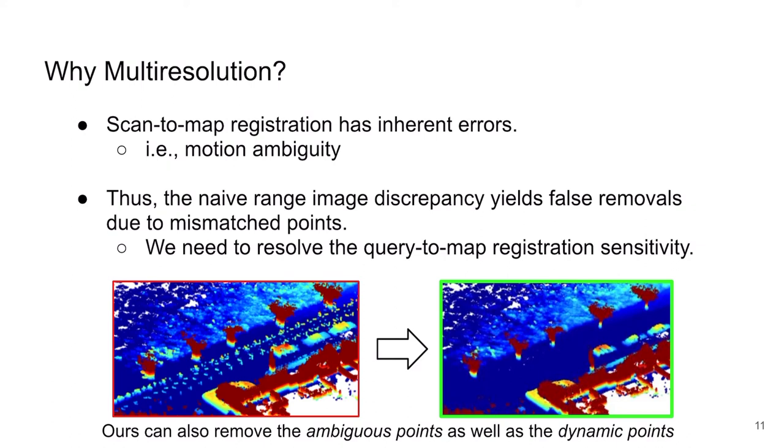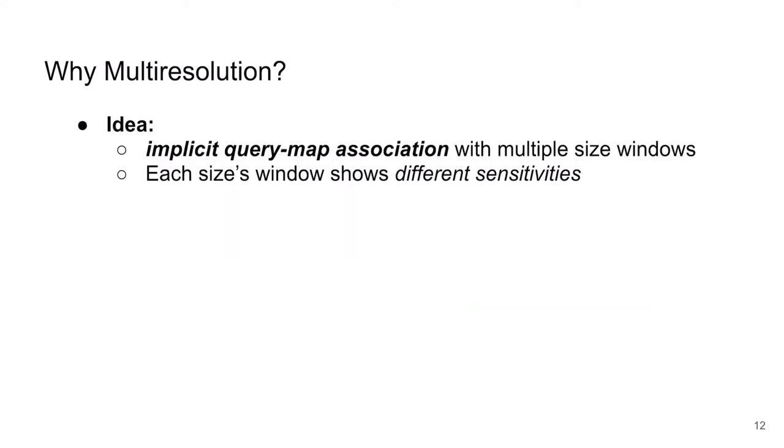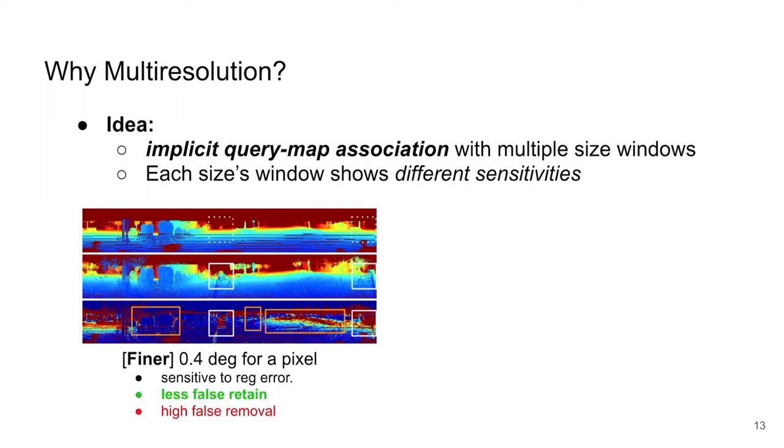How could we do that? The core idea, which is our second contribution, is using multiple-sized windows. This is actually implemented as multi-resolution range images. For example, at the left side, a single pixel is about 0.4 degree in the vertical and horizontal FOV. This fine resolution of the range image tends to be removed falsely, but it is relatively aggressive, so good at removing dynamics.